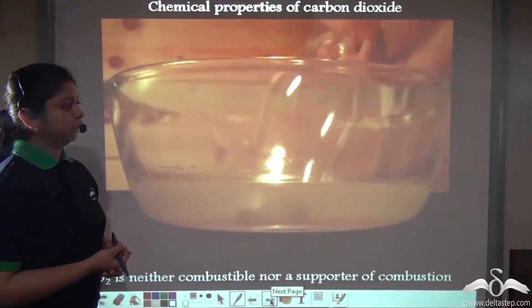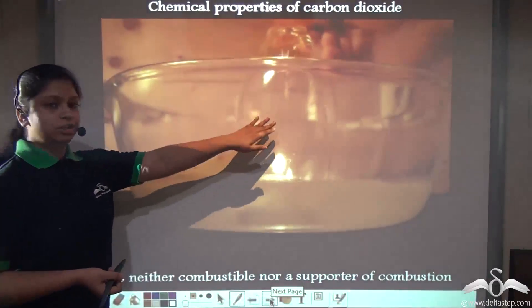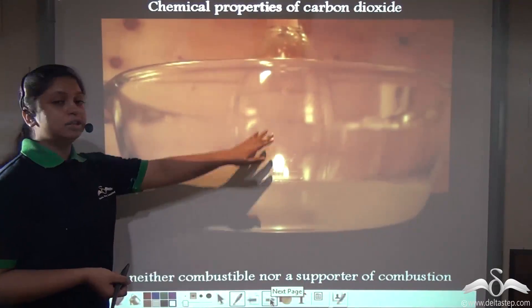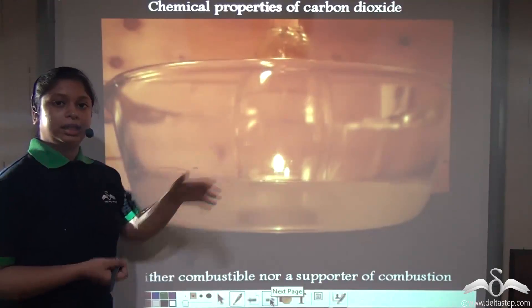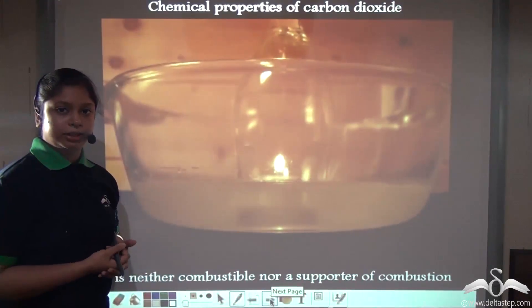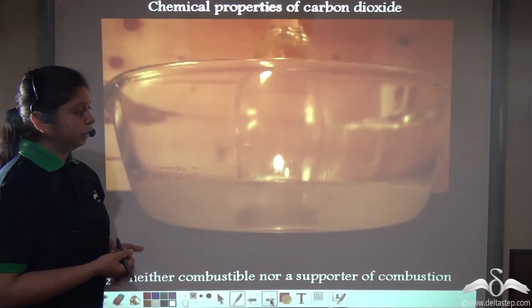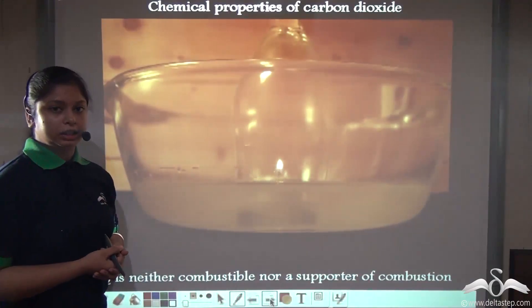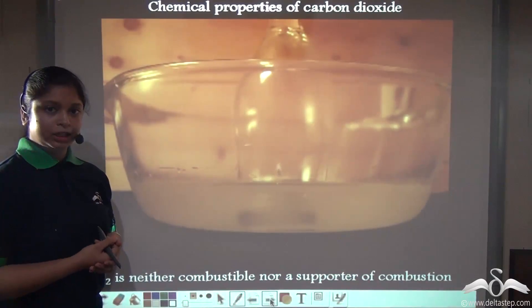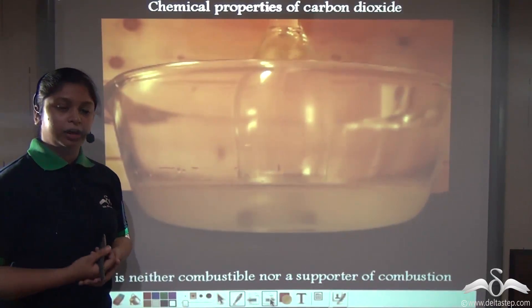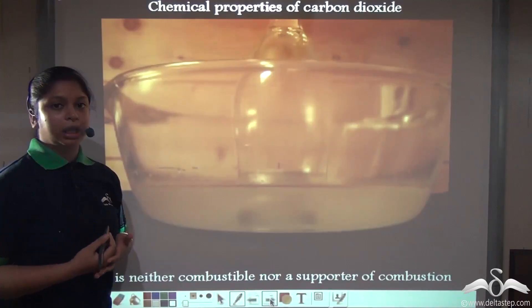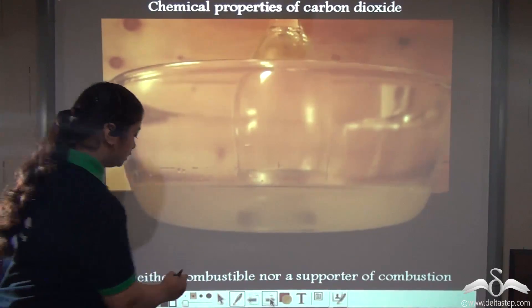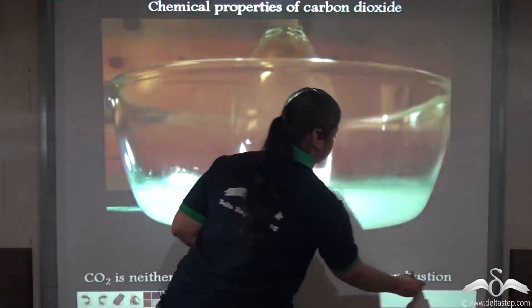As seen in this video, we insert a glass jar over a burning candle. This glass jar contains carbon dioxide gas. As you can see, the burning candle gradually dies off. So from this, we can infer that carbon dioxide is neither combustible nor a supporter of combustion.